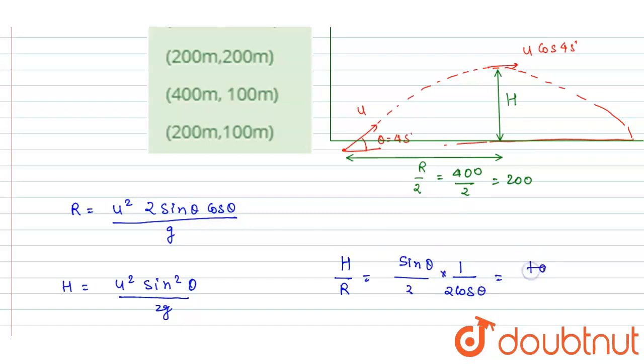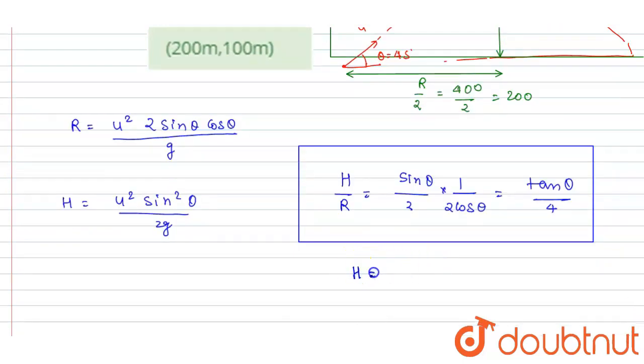Here theta itself is 45 degrees, right? So put the value 45. Theta is 45, so tan 45 is 1, so it will be R by 4.